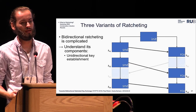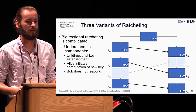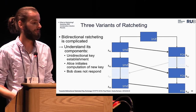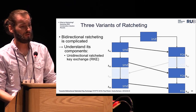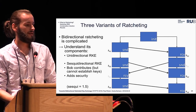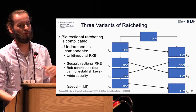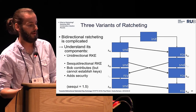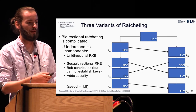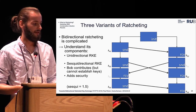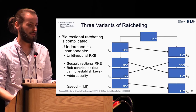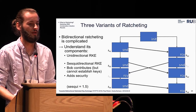Therefore we look at different variants of ratcheting. The first is unidirectional key establishment: Alice is only able to initiate the computation of keys and sends the ciphertext to Bob, who on receipt can compute these keys but cannot respond — we call this unidirectional ratcheting key exchange. The second variant is sesquidirectional ratcheting key exchange, in which Bob is also able to respond and contribute information to the session, and Alice is able to receive this information. The ciphertext from Bob to Alice do not have the same full functionality as those from Alice to Bob; they add security and provide stronger security guarantees. We call this sesquidirectional — meaning one and a half — because we consider these ciphertexts from Bob to Alice to have only half the functionality.